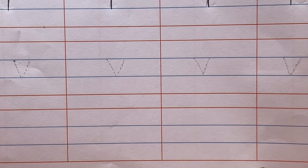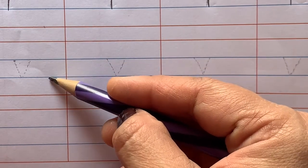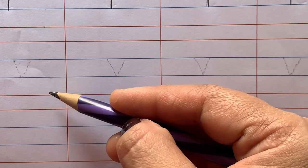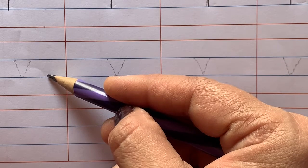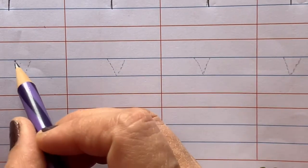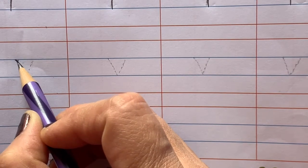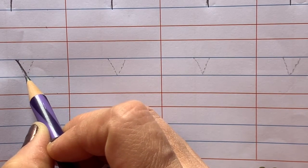Children, let's learn how to write small letter V in four line notebook. Red line, blue line, blue line, red line. We write small letter V in two blue lines. Start from the upper blue line, come down to the lower blue line, make a slant line again.